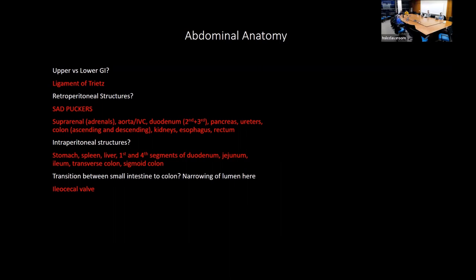If a patient has a fistula between the gallbladder and the GI tract, you can develop gallstone ileus. Gallstones in gallstone ileus will become trapped at the ileocecal valve because of the narrowing. In hypovolemia or shock, ischemia of the bowel occurs at watershed areas — the splenic flexure and rectosigmoid junction. You'll see pain out of proportion, elevated lactate, and metabolic acidosis.